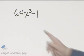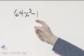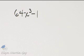What is the first step in factoring? Look for a common factor. There is none other than 1 or negative 1.